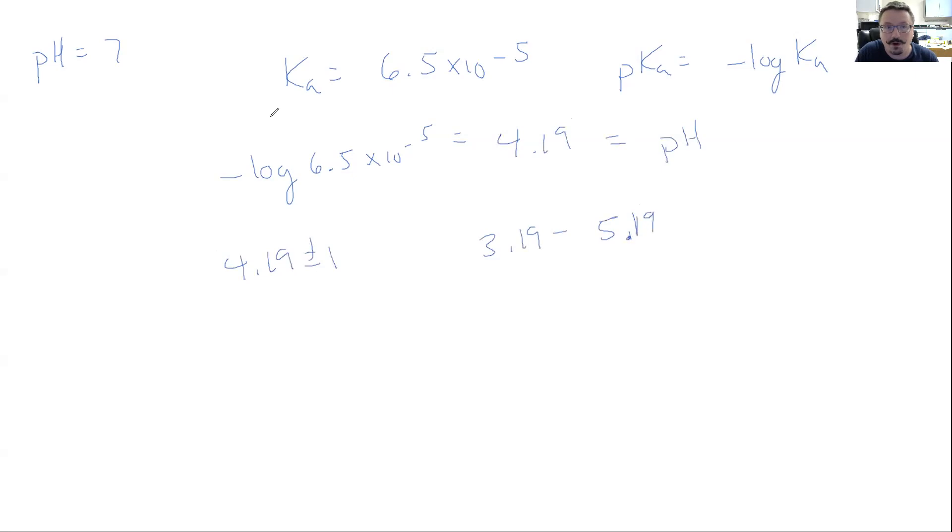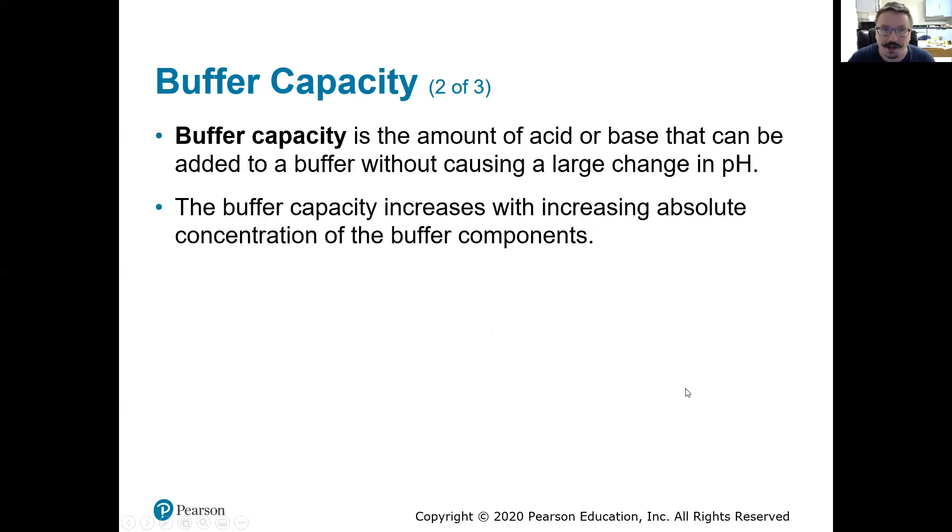And what do we wanted? We wanted seven. We can see this is not the ideal buffer or making this out of benzoic acid as our weak acid would not be the ideal solution for this buffer.